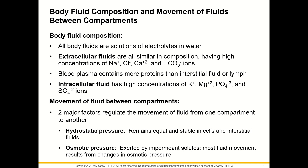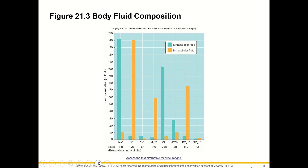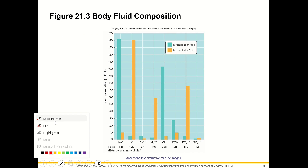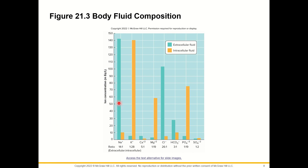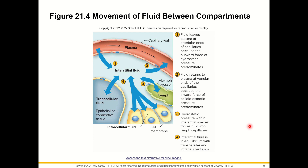There are two major factors that regulate the movement of fluid from one compartment to another: hydrostatic pressure and osmotic pressure. Hydrostatic pressure remains equal and stable in cells and interstitial fluids. Osmotic pressure is exerted by impermeant solutes, and most fluid movement results from changes in osmotic pressure. In the extracellular fluid we have higher amounts of sodium and chloride, while intracellular fluid has higher amounts of potassium, magnesium, and phosphate.